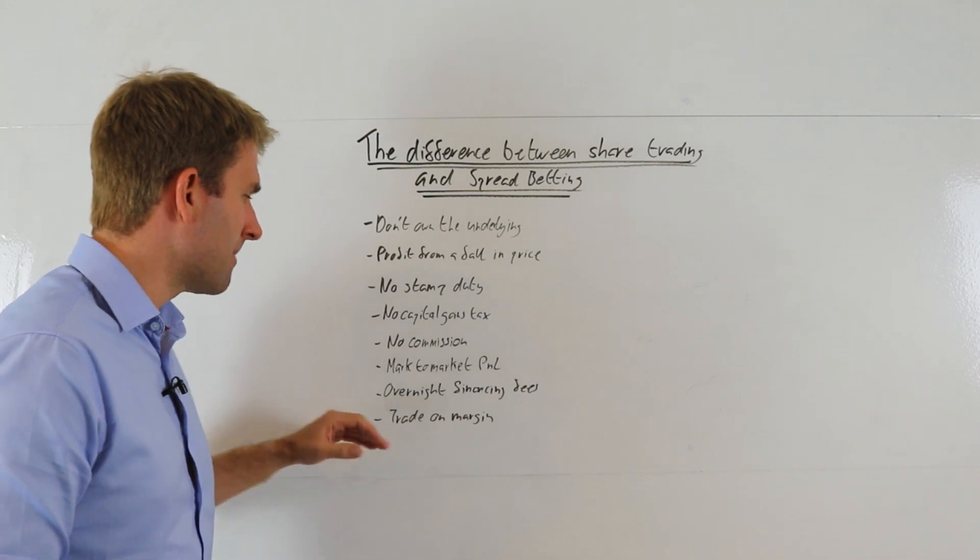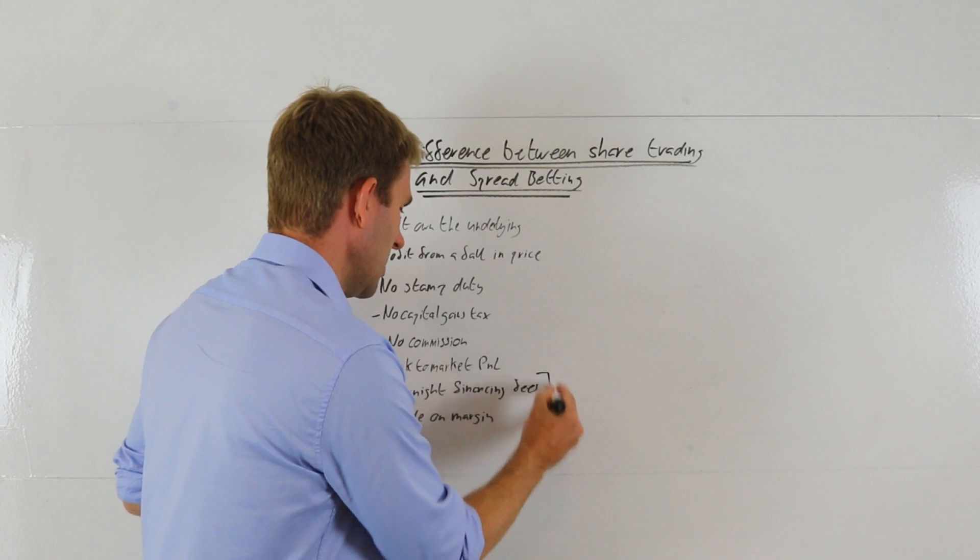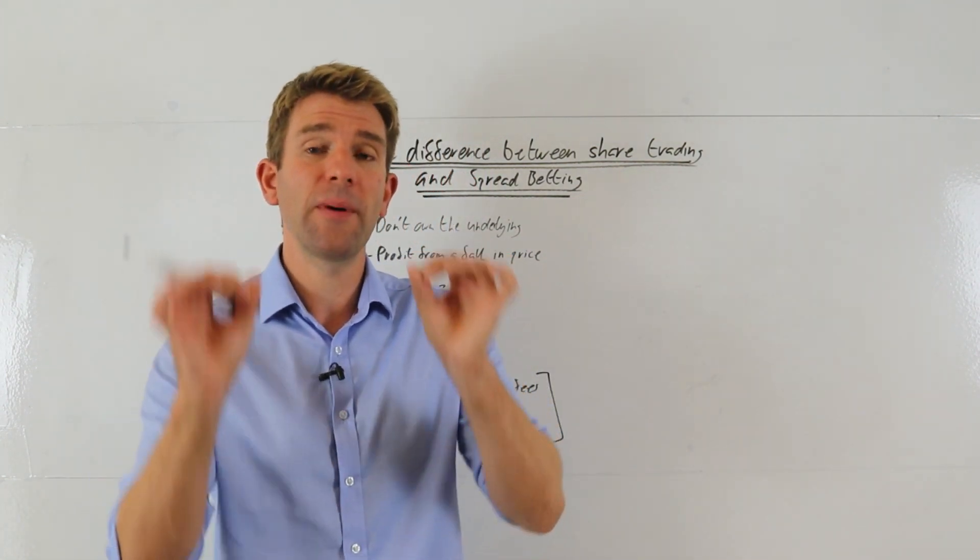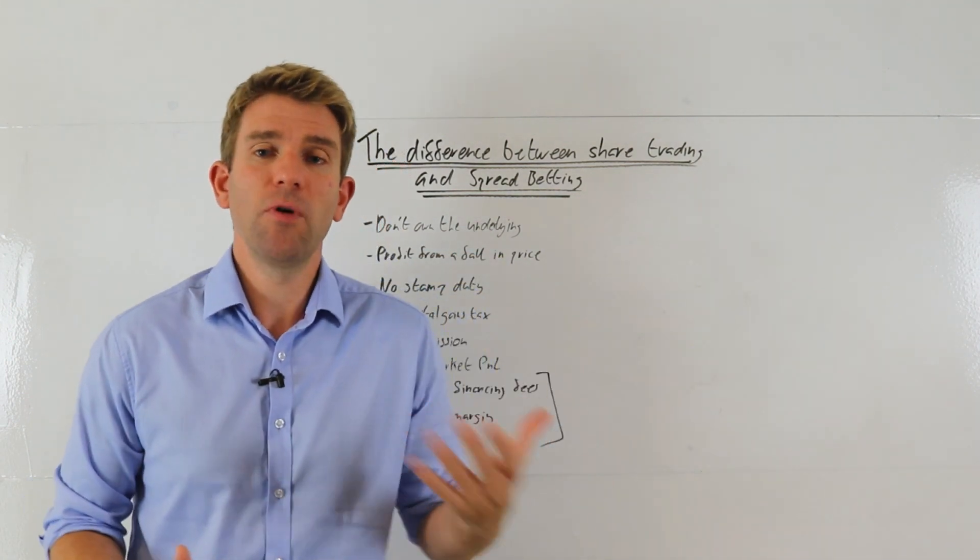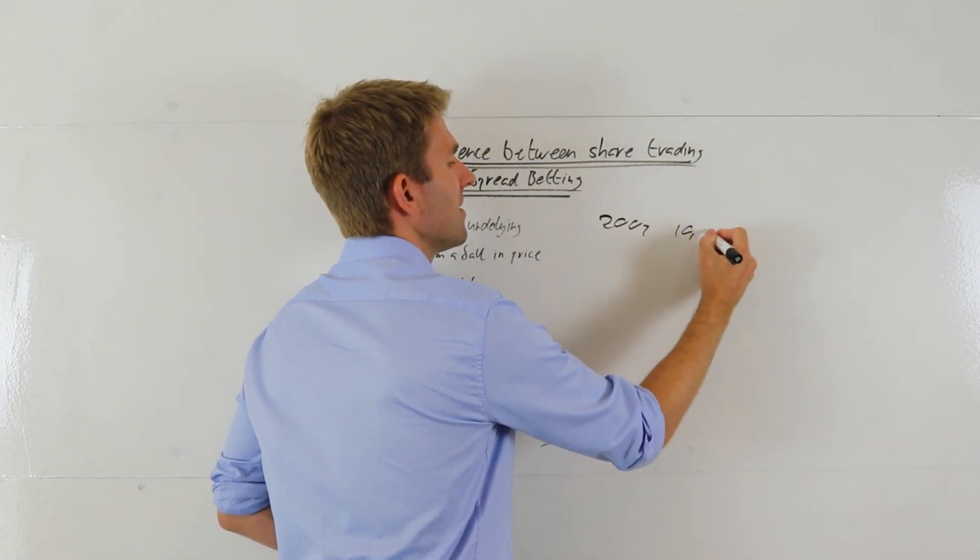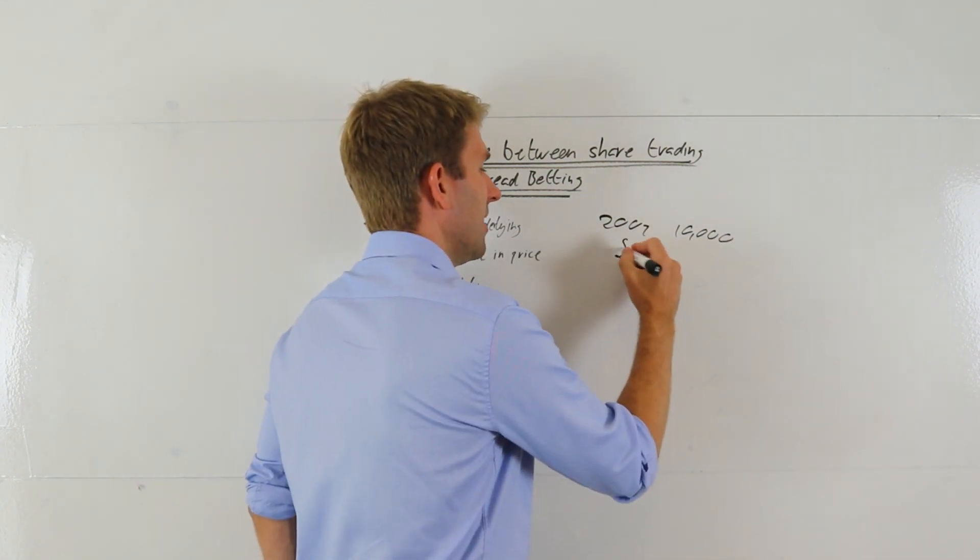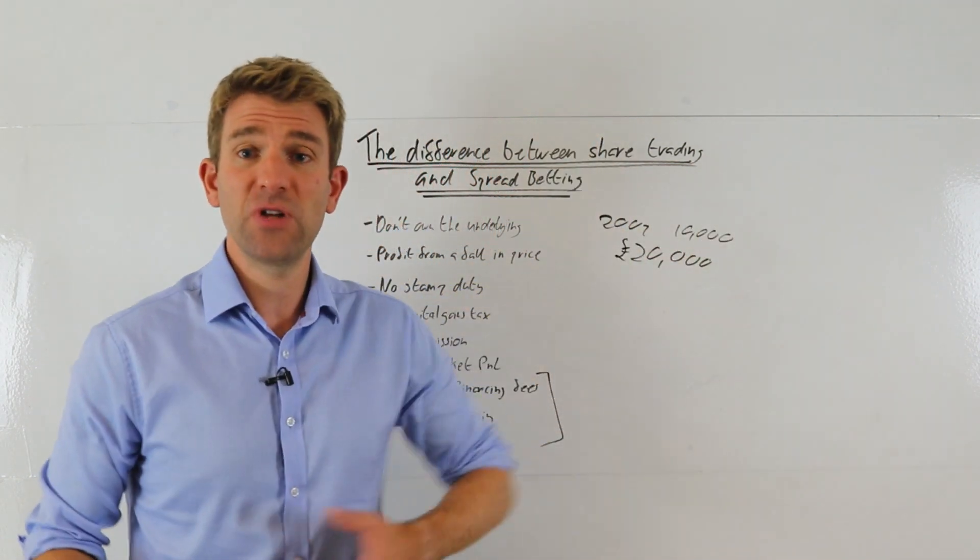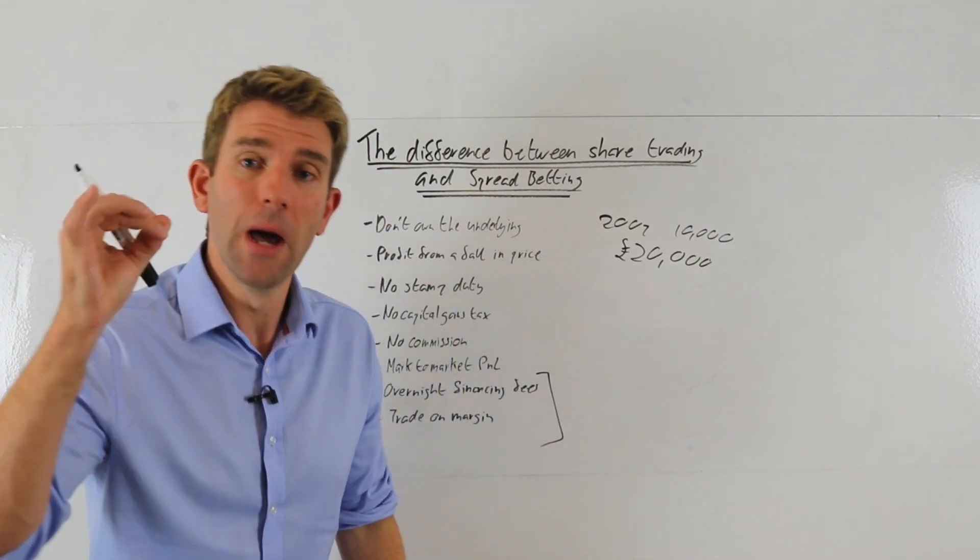You've got overnight financing fees. So when you're placing trades - I'll put these both into one actually - when you're buying a spread bet, you're effectively trading on margin. You're going to put up a very small percentage of the underlying notional value. So let's say you were buying a share at 200 pence, you're buying 10,000 shares of that. That's obviously going to be twenty thousand pounds if you're buying the share with a traditional stock broker, right? Because it's ten thousand shares times two quid, twenty thousand pounds. You have to buy that, spend twenty thousand pounds.